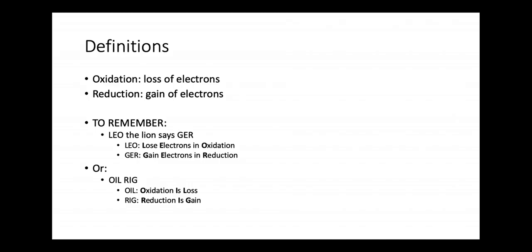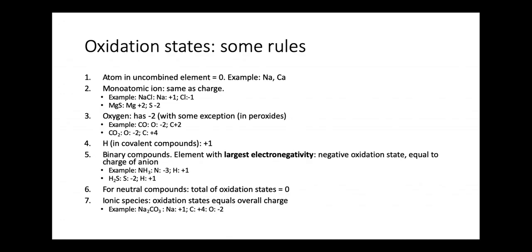Oxidation means loss of electrons, reduction means gain of electrons. To remember that you can use 'Leo the lion,' or what I mostly use is OIL RIG — oxidation is loss, reduction is gain. So we talked about some oxidation states and oxidation numbers, and there were some rules.